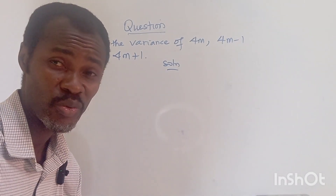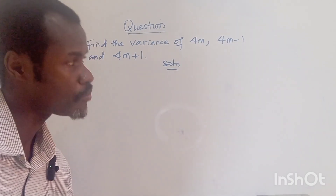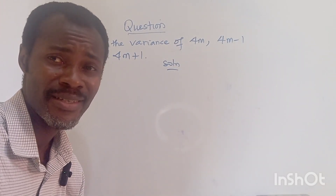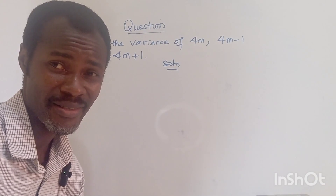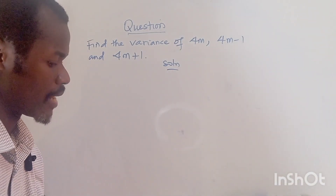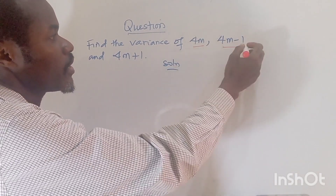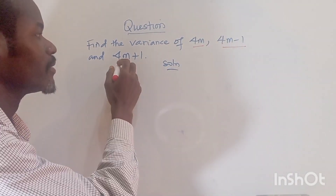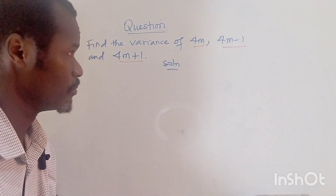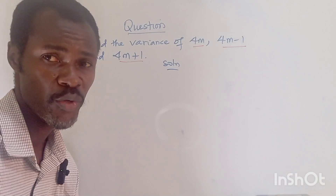Let's look at the simple problem on the board. The question is on variance, which is a measure of dispersion. We're going to find the variance of 4m, 4m minus 1, and 4m plus 1. These are not numbers — they are written in the form of algebraic expressions.